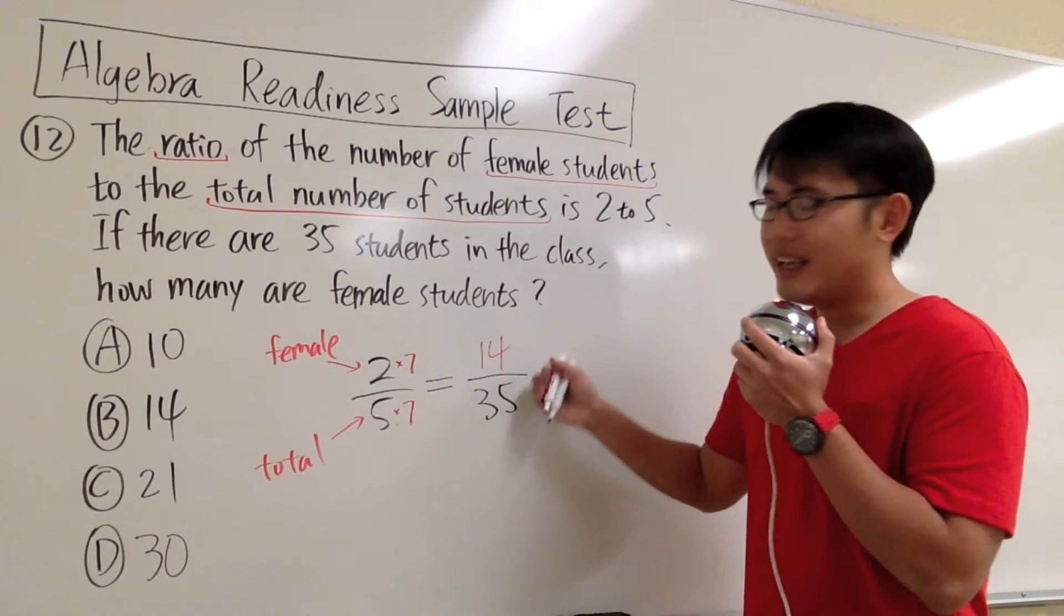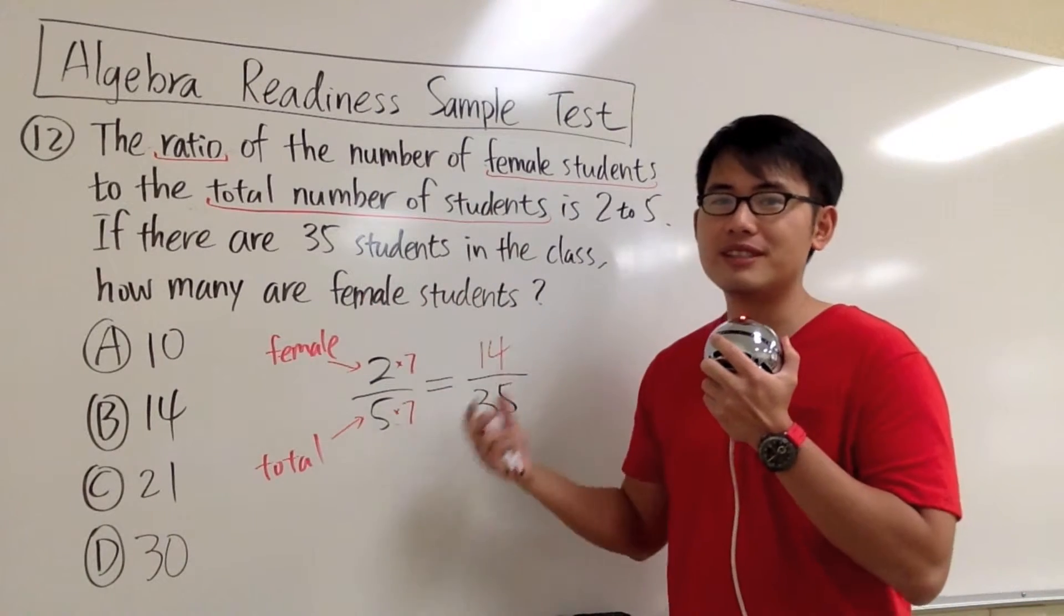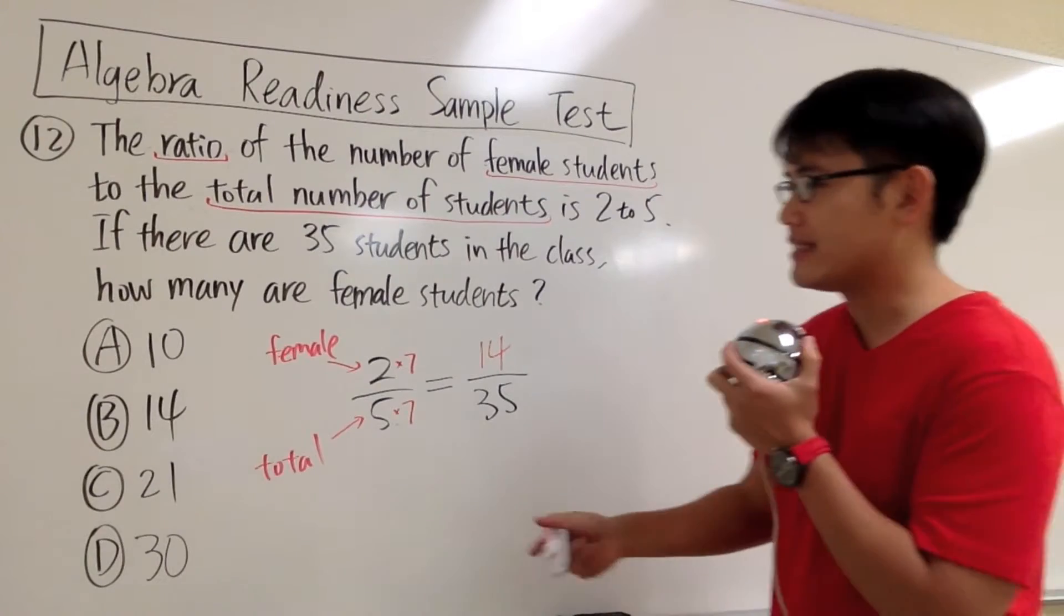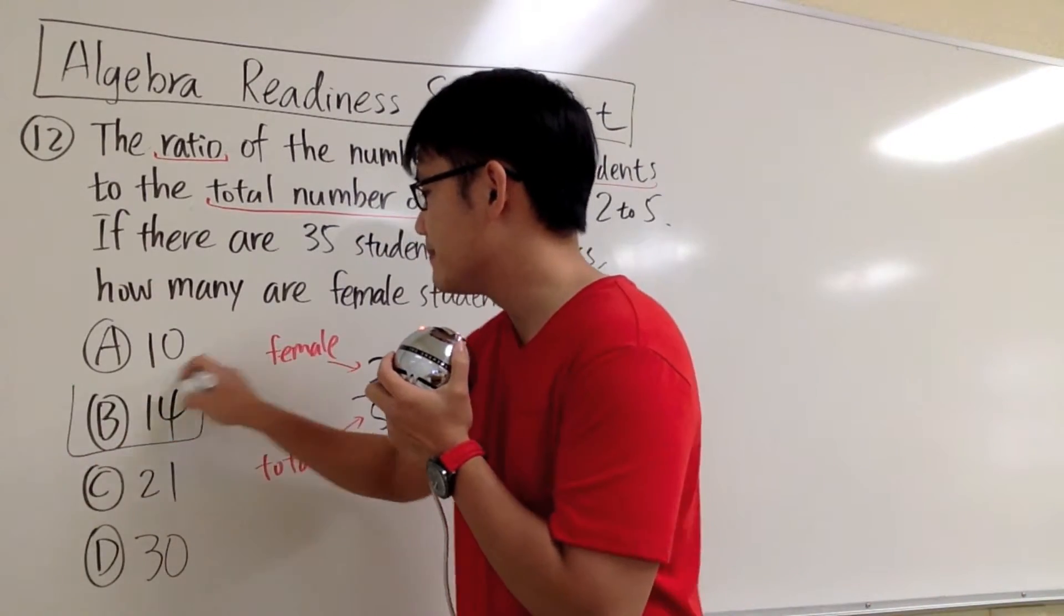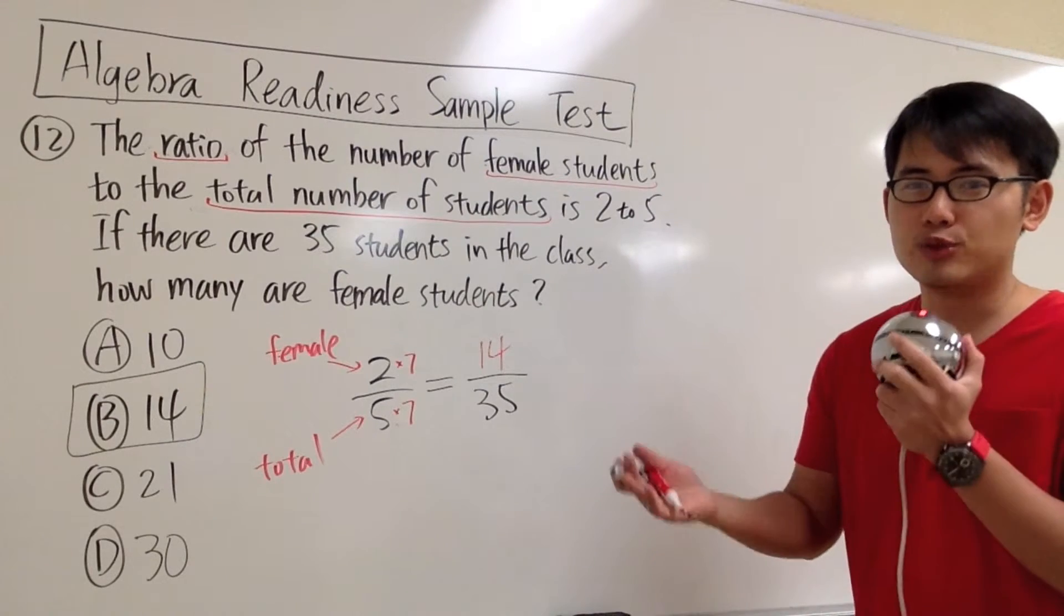This numerator will represent how many female students we have in the class. So 14 will be the answer. And that's answer choice B. That's it, but I would also like to show you a more algebra way to do this.